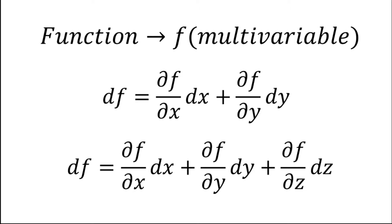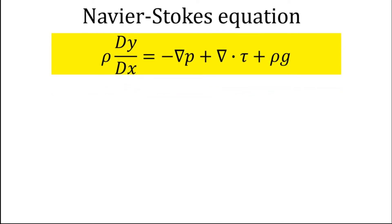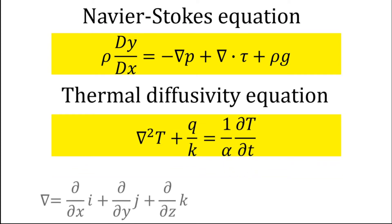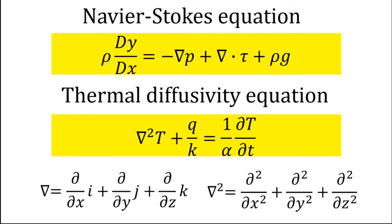Similarly, if f is a function of x, y, z you can do the same thing. Partial derivatives appear in most equations where anything varies in 3D — they are a must. You can see here the Navier-Stokes equation and the thermal diffusivity equation as examples, where you have the nabla operator, which is essentially a sum of three partial derivatives with respect to their respective vector coordinates.